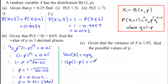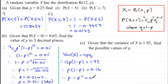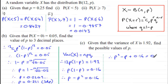Dividing both sides by 12, we get P times (1 minus P) = 0.16. Expanding gives P minus P² = 0.16. To solve this quadratic I rearrange to make it equal zero: adding P² to both sides and subtracting P gives P² minus P plus 0.16 = 0.